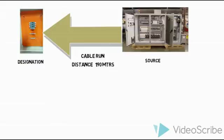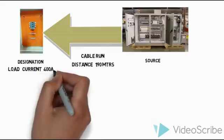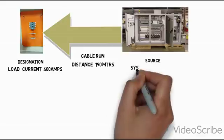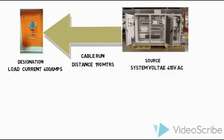After that, the load current - how much is the load current? The load current here is 400 ampere. And then finally the voltage, the system voltage is 415 voltage here.